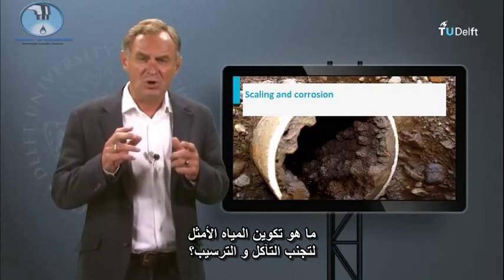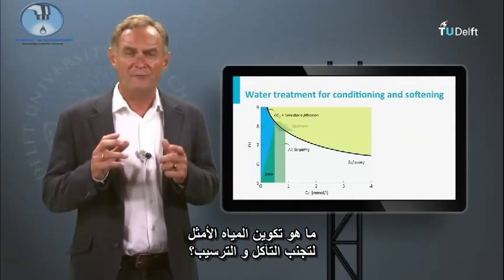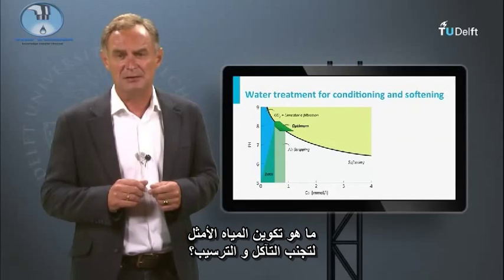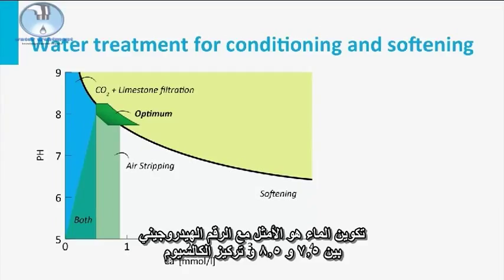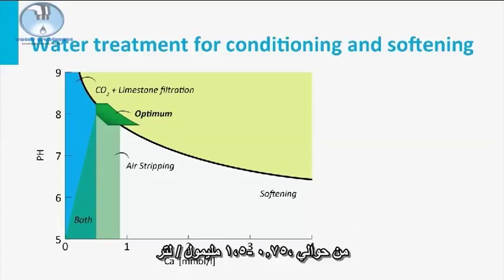What is the optimal water composition to avoid corrosion or scaling? The optimal water composition is with a pH between 7.5 and 8.5 and a calcium concentration between 0.5 and 1.25 millimole per liter, depending on the magnesium concentration. This gives a total hardness of about 0.75 to 1.5 millimole per liter.